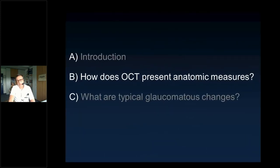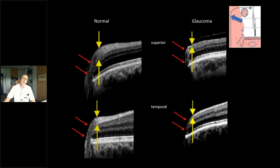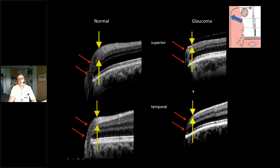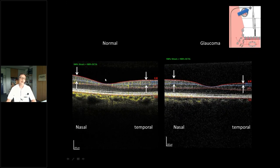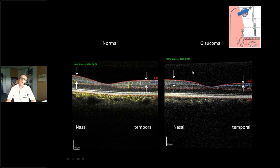How does the Spectralis present anatomic measures we're interested in? When we compare a normal person on the left with a glaucoma patient on the right, we see that the neural rim and nerve fiber layer in glaucoma thin — tissue is lost. Thickness measurements give us an idea about the atrophy occurring. This is true not only for the optic disc but also for the macula, where ganglion cells in the glaucoma patient are thinner than in the normal person.